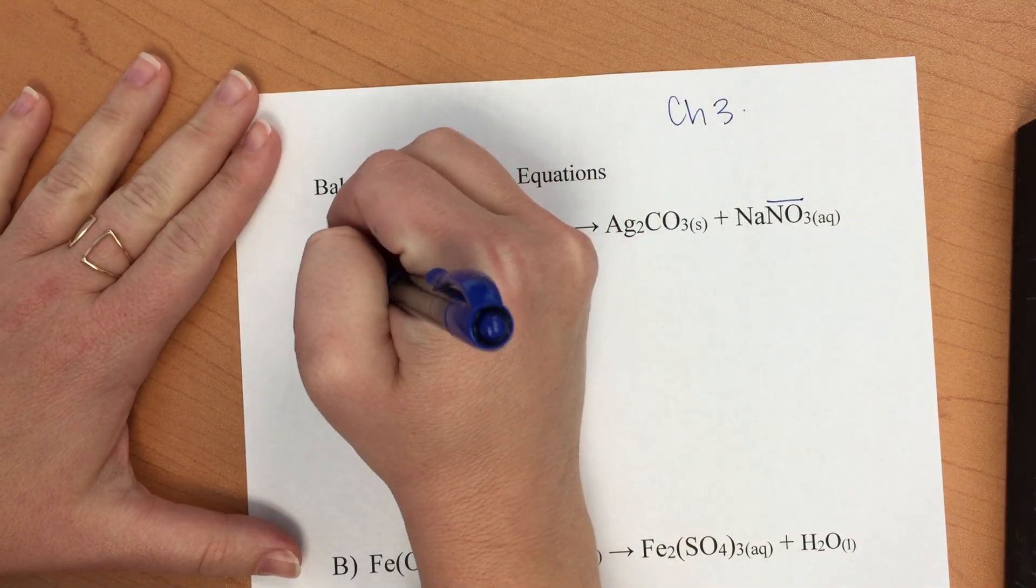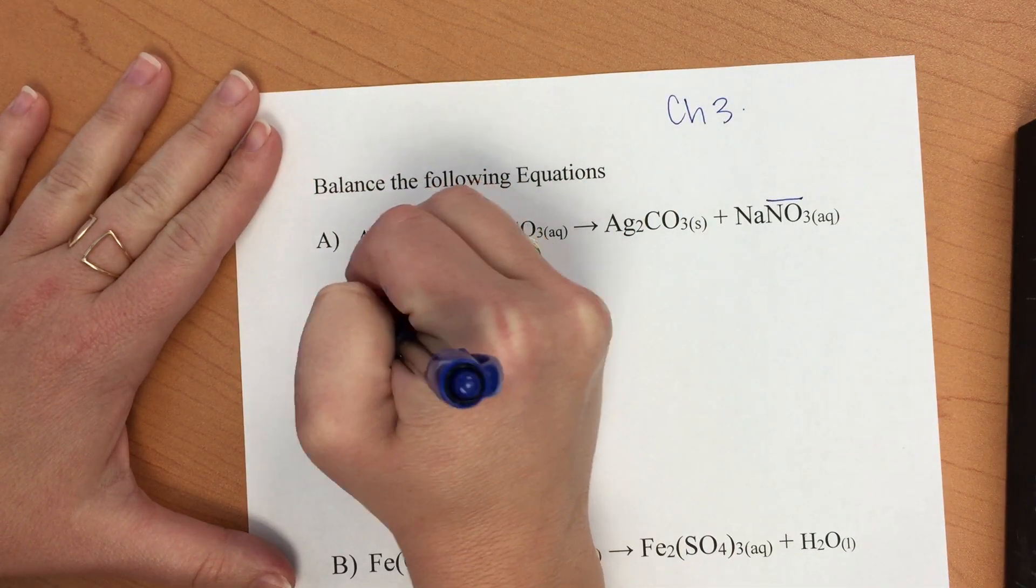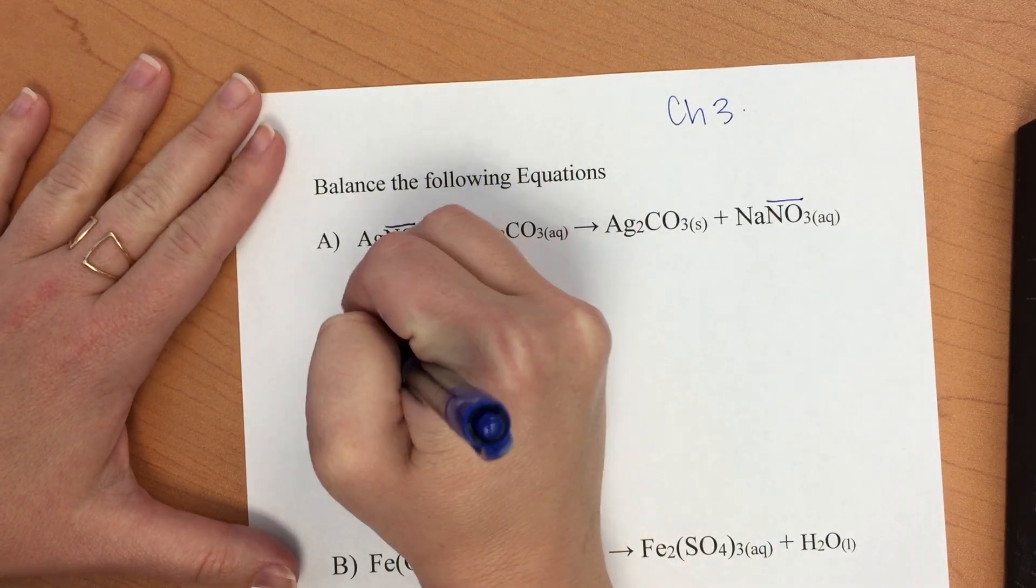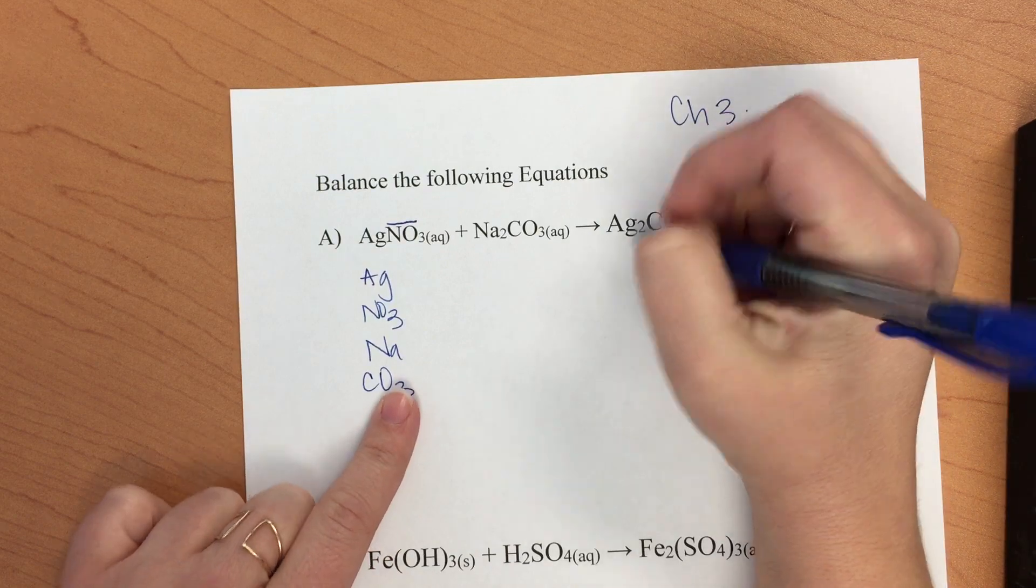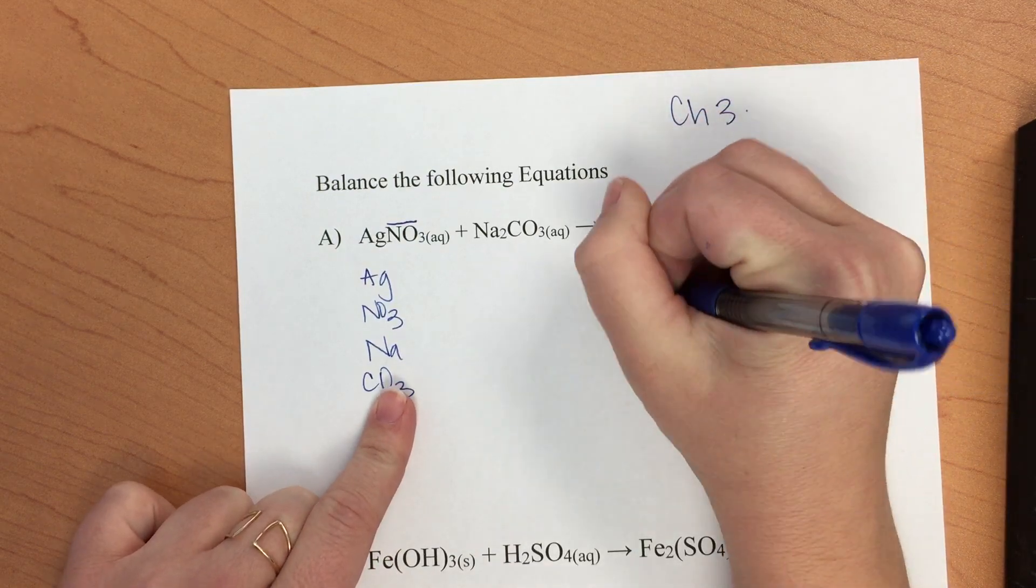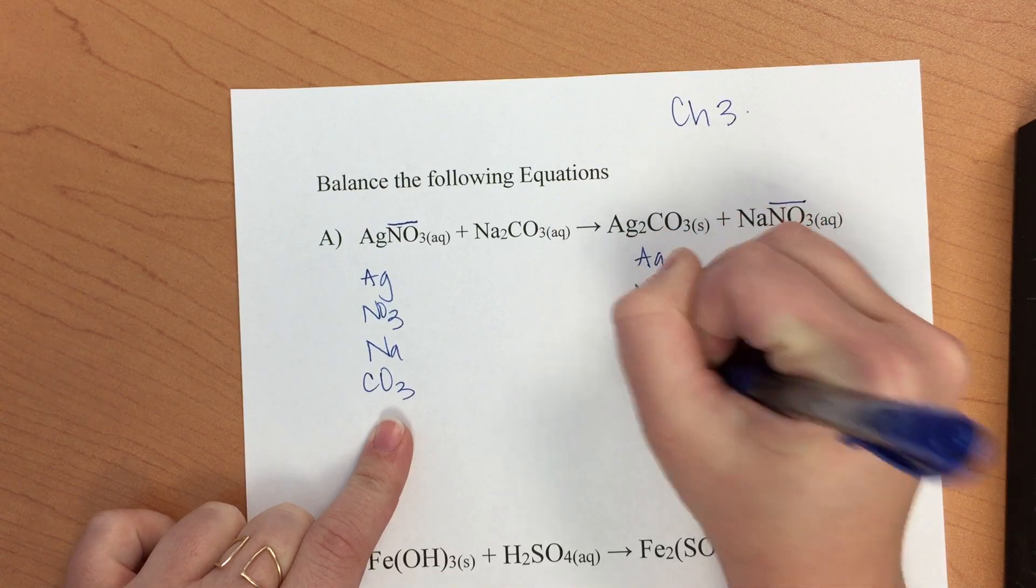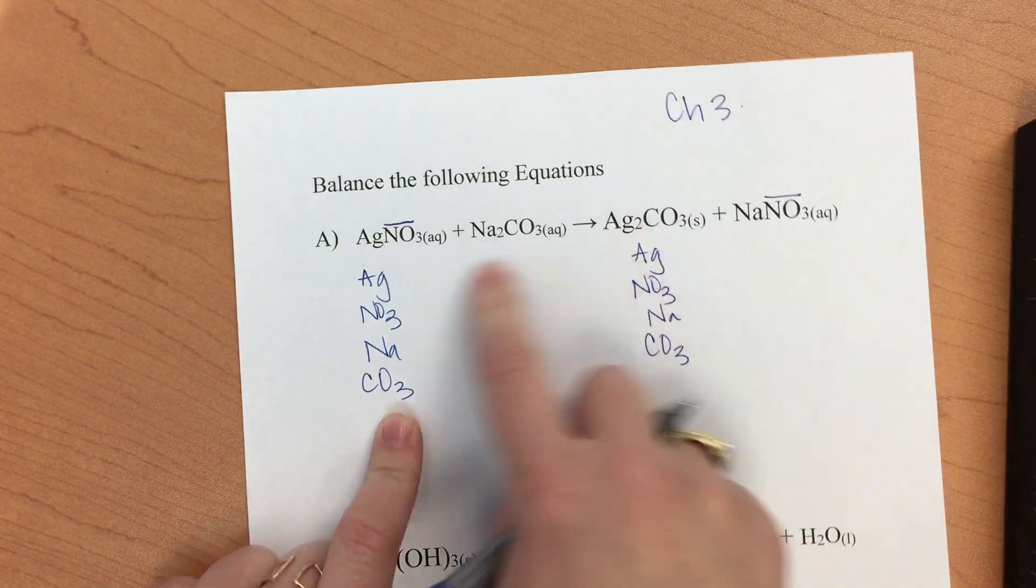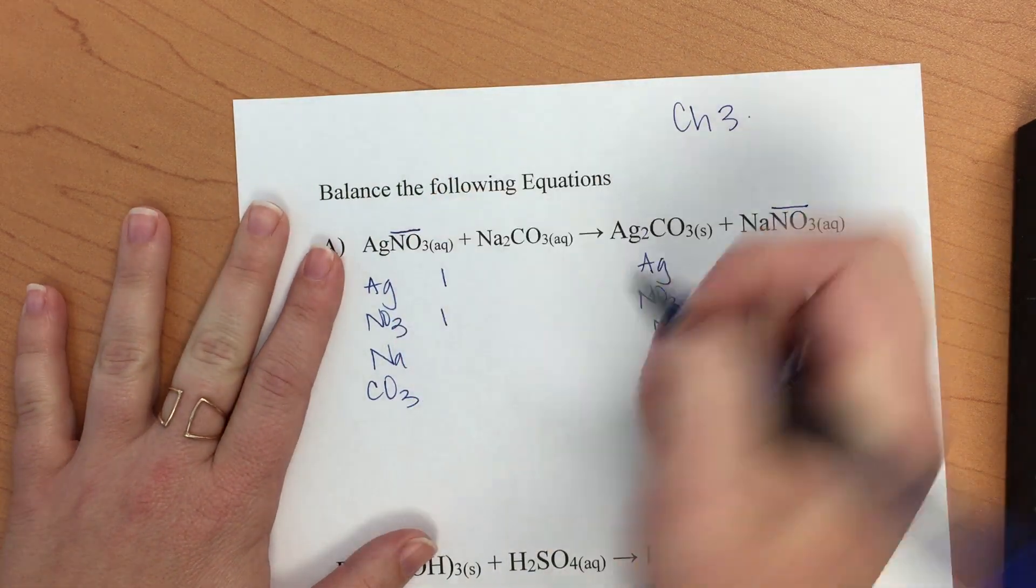We have silver, nitrate, sodium, and carbonate. See those on both sides. Now we write out the number of each that we observe on the reactants or the product sides. We have one of each of these, we have two sodiums and one carbonate on this side.